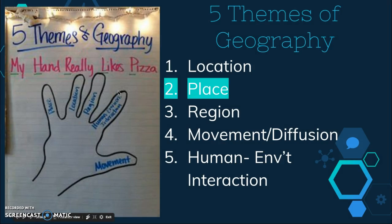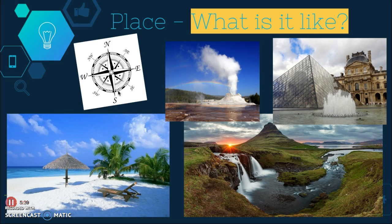Next we're talking about place. Place answers the question, what is it like? It's what makes a location unique — very descriptive, and anything can be a place. Every place has every aspect of location, so the four types of location we just talked about are all applicable to place. Places all have landscapes, both cultural and physical. Also recognize that place changes over time — it does not always stay exactly the same.